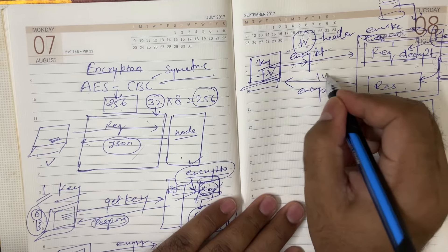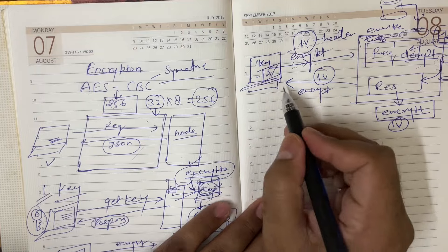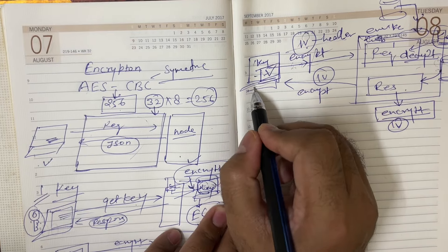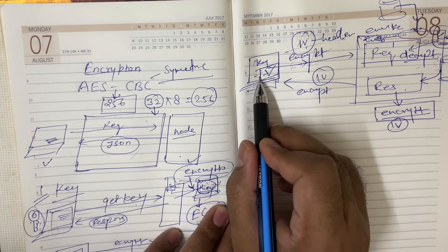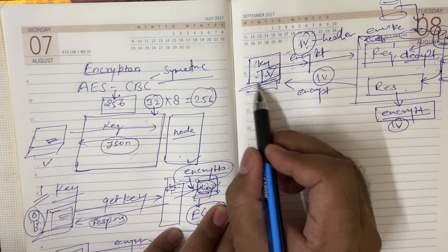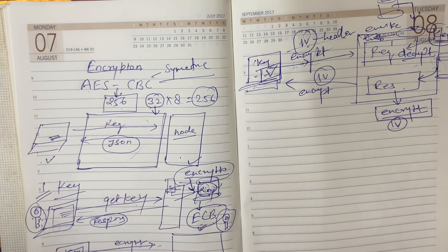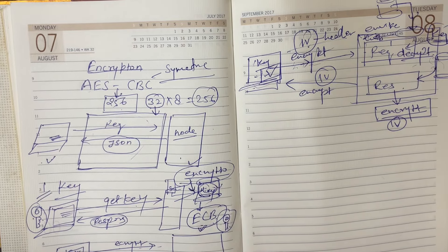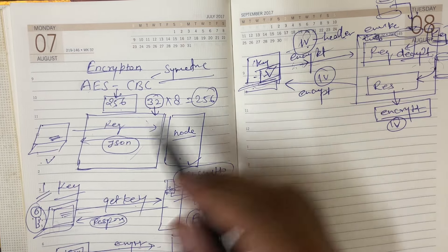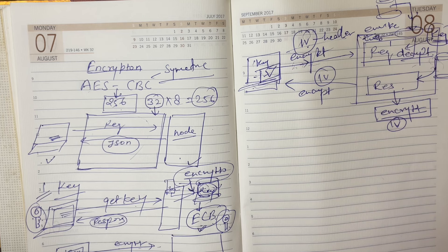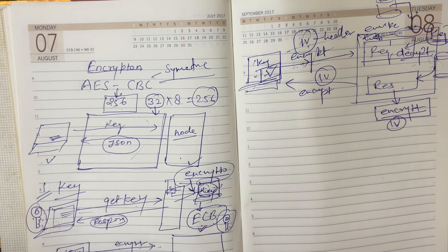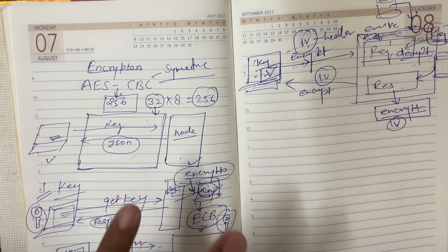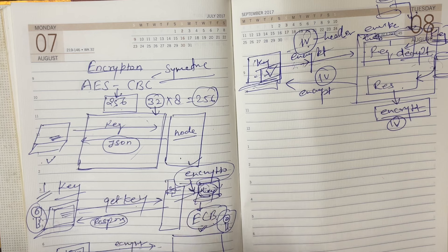The client receives the encrypted response with the initialization vector as a header, then decrypts it and stores the result. In this way we can execute the complete processing and implement encryption and decryption, making the API secure.